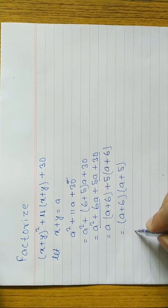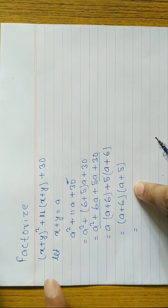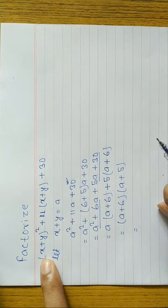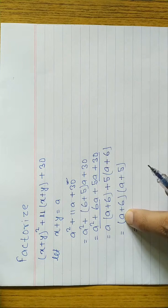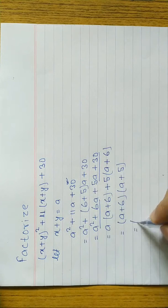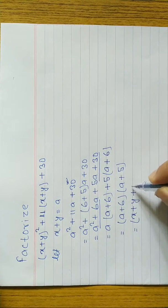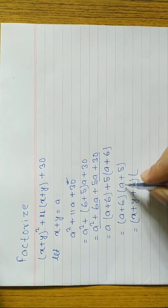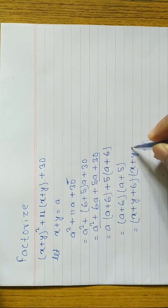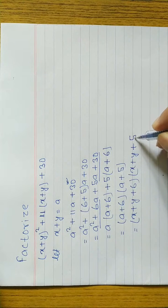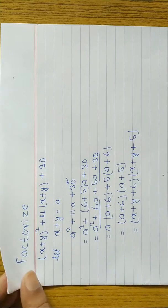We take (a + 6) common and what remains is (a + 5). So the factorization of a² + 11a + 30 is (a + 6)(a + 5). But the question is in terms of x + y, and we let a = x + y. So substituting back: the answer is (x + y + 6)(x + y + 5).